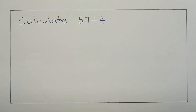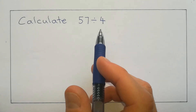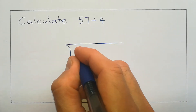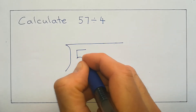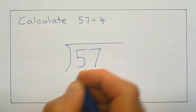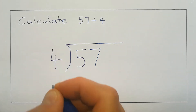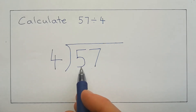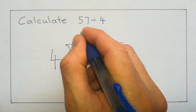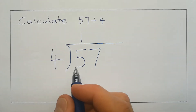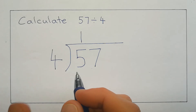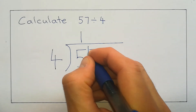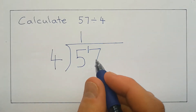Now to our second division: 57 divided by 4. So we're going to draw our bus stop again. Our 57 goes on the inside, and our 4 goes on the outside, waiting at the bus stop. So, how many times does 4 go into 5? Well, 4 goes into 5 once, because once 4 is 4, but we've still got 1 left over. We've used up 4, so we've got 1 more to take us up to 5. So the 1 left over we can put in front of the 7, so we've now got 17.